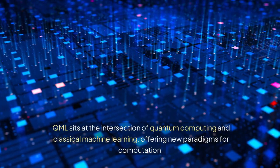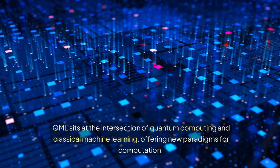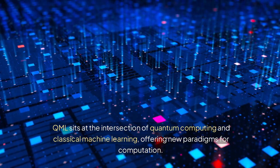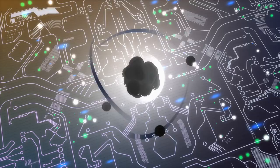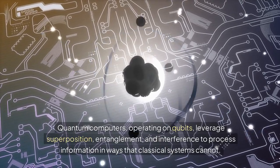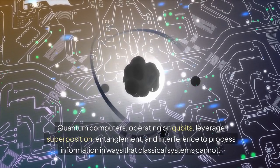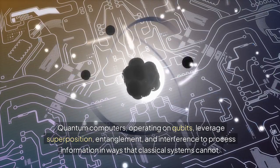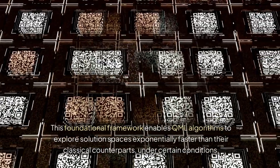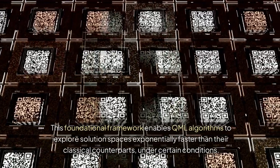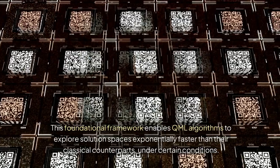QML sits at the intersection of quantum computing and classical machine learning, offering new paradigms for computation. Quantum computers operating on qubits leverage superposition, entanglement, and interference to process information in ways classical systems cannot. This foundational framework enables QML algorithms to explore solution spaces exponentially faster than their classical counterparts under certain conditions.